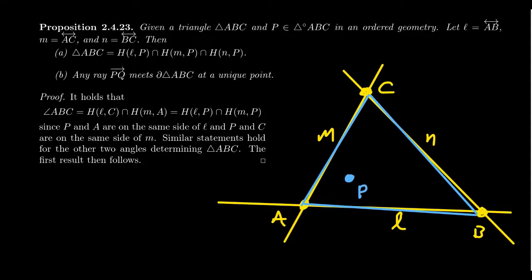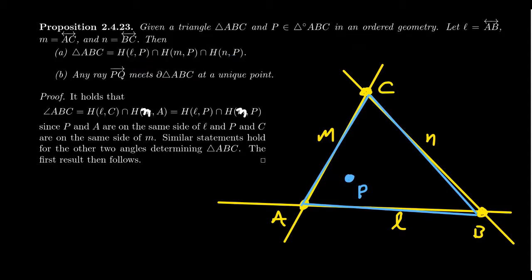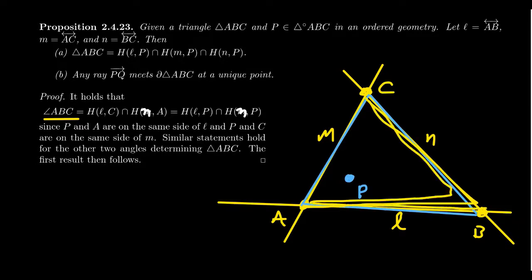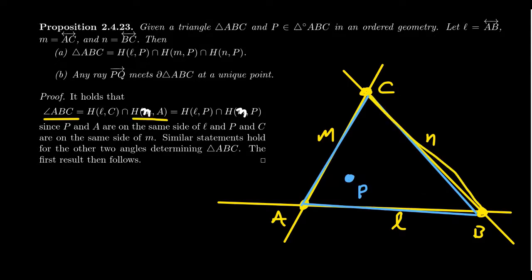Part A of this proposition states that we can define the triangle not only as the intersection of three angles, but equivalently as the intersection of three half planes — the half planes associated to lines L, M, and N, using the interior point P. The proof is straightforward: the angle ABC, illustrated in the diagram, is by definition the intersection of the half plane bounded by line L containing C, and the half plane bounded by line N containing A.